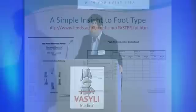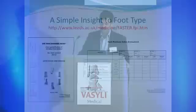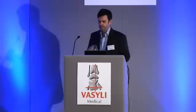We can get an insight into dynamic foot function by using some static tools, but one of the limitations is that they are based on static assessment. The foot posture index is one of the more useful tools we now have available, and it represents a quantum leap over some of the tools we had previously. Full details of the foot posture index can be found via the FASTER website — FASTER standing for Foot and Ankle Studies in Rheumatology.